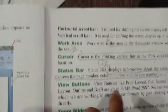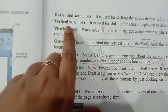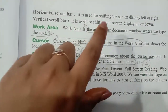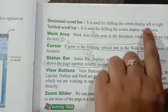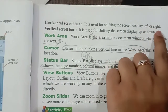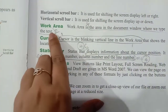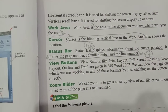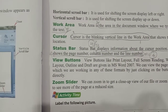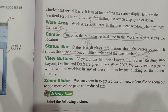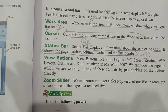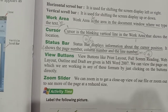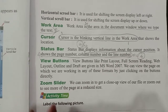There is a horizontal scroll bar and a vertical scroll bar. Then comes the Work Area — this is where you can type and work. In Paint there is a Drawing Area, and in Word there is a Work Area.